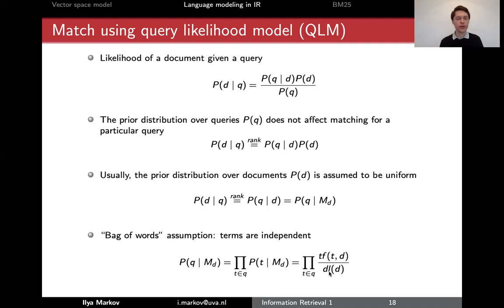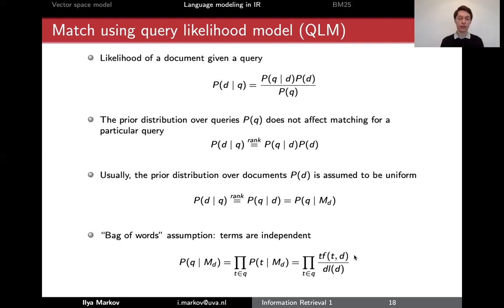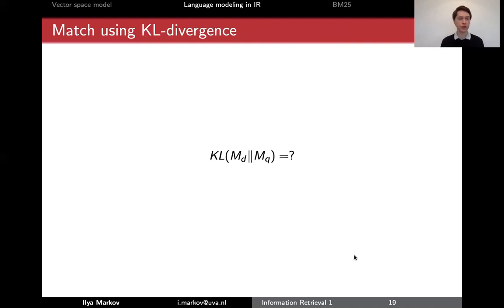The probability of a word in a document is tf divided by the document length, as we saw on the previous slide. So this is pretty much the query likelihood model — this is how you match the distribution of a document with the distribution of a query.